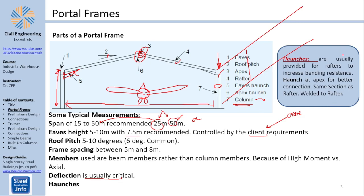Now, what are haunches? Haunches are usually provided for rafters to increase the bending resistance. Haunch at apex is also done for better connections, same section as the rafter, and it's welded to the rafter. I will give more details when we reach the connection details of that structure.